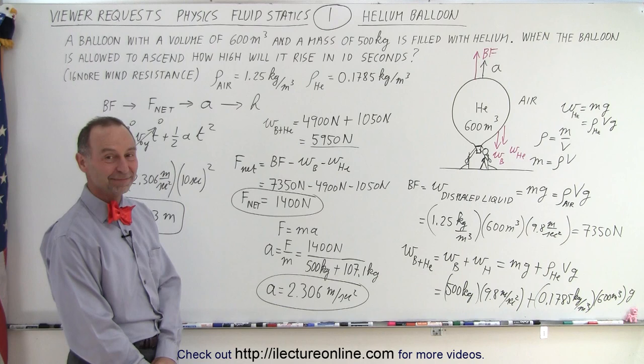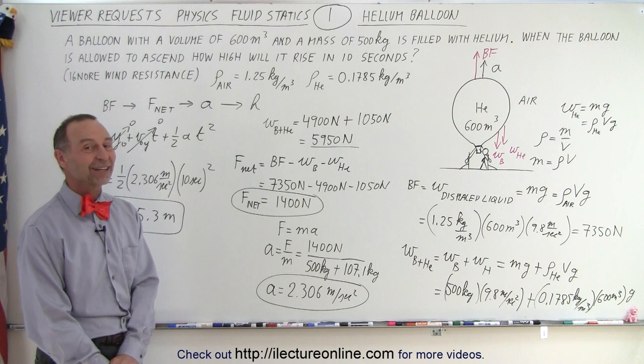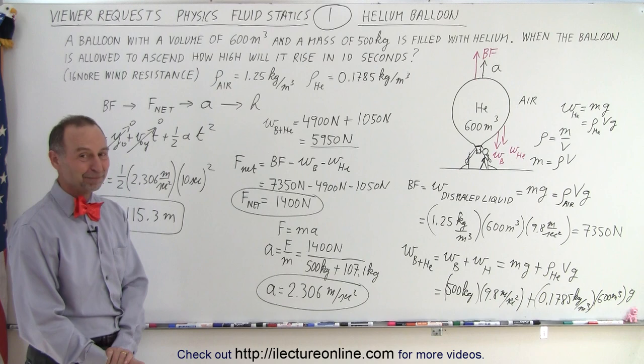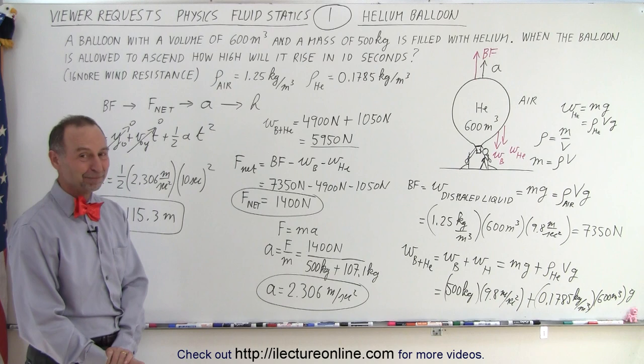A student asks: what would the result be if the volume was 6,000 cubic meters? Working it out that way gives an acceleration of about 32 meters per second squared — faster than most accelerators. So those numbers were unreasonable, which is why the problem was adjusted to 600 cubic meters for a more realistic result.